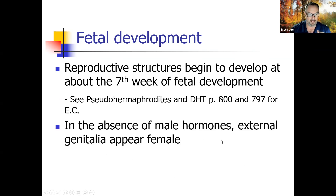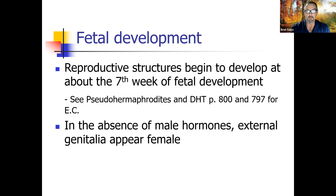In the absence of male hormones, external genitalia appear female. All babies are female unless there's a Y chromosome there that converts that normal female baby into a boy. Genetically speaking, boys are highly modified females. It's the absence of the Y that makes someone female, and when the Y is present the baby becomes a boy.